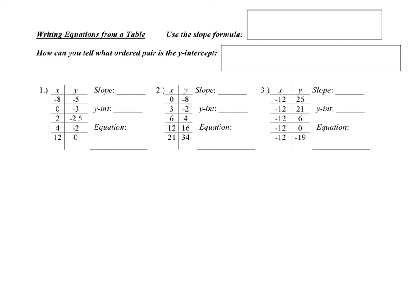So if I'm giving you a table, let's take a look at these three problems — I'm asking you for three things. If you know the slope and you know the y-intercept, then you can write the equation. When you're trying to find the slope from a table, we're using the slope formula: m equals y-sub-2 minus y-sub-1 over x-sub-2 minus x-sub-1. You could also flip x-sub-1 and x-sub-2 as long as the top and bottom are in the same order. When you're given a table, the y-intercept is the place where x equals 0.